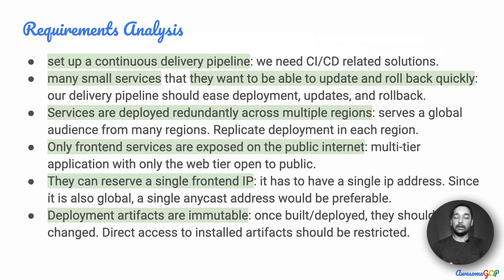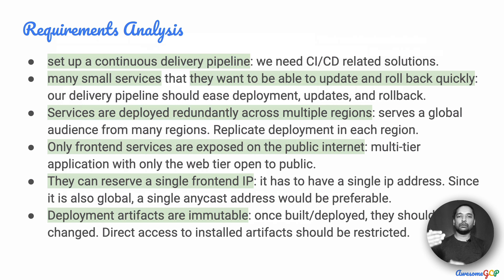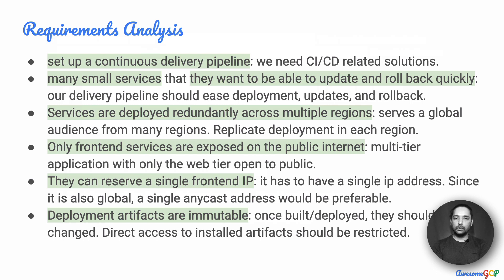Services are also deployed redundantly across multiple regions, so this serves a global audience and we will have to replicate exactly the same deployment in multiple regions. Only front-end services are exposed on the public internet, which means this is a multi-tier application with only the web tier open to the public. They can reserve a single front-end IP, so the solution we choose ideally should be global and have a single anycast address, such that across the world wherever you are, when you access one single IP address, it takes you to the server closest to where you are.